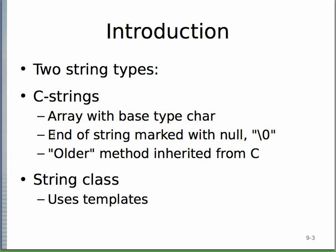The big difference with C-style strings is that when you use an array you always need null termination — the end of the string must be marked with a null character, shown as backslash zero. It's not the number zero; it's the value zero, meaning all eight bits are zero. This older way of representing strings is inherited from C. The better way is definitely to use the string class.